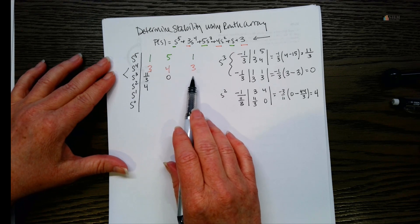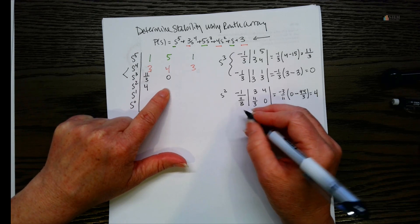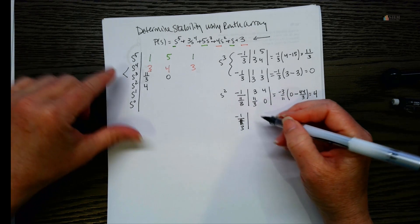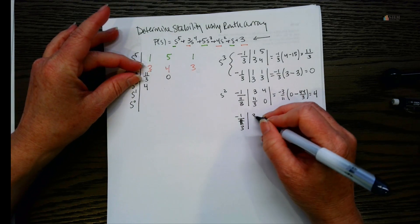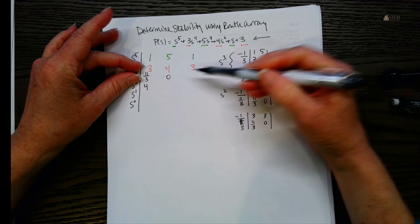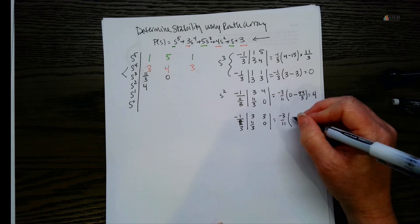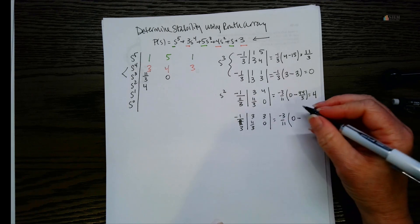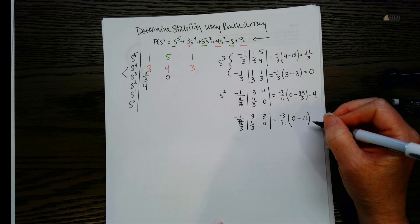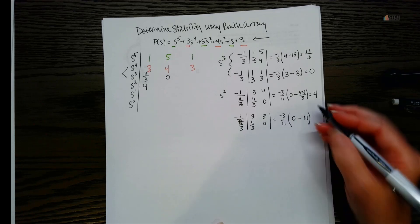For the next element in the s-squared row, we use negative one over eleven over three again. There's a blank in the array, so we plug in zero. The determinant uses three and eleven over three in the first column, and three and zero in the last column. That gives us negative three over eleven times the quantity three times zero minus three times eleven over three, which equals negative three over eleven times negative eleven — the negatives cancel giving us three.